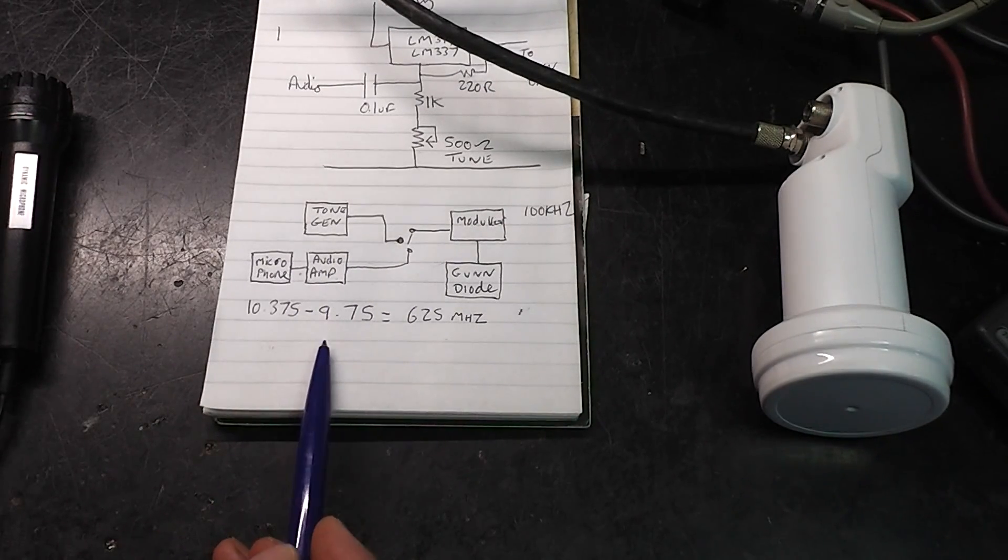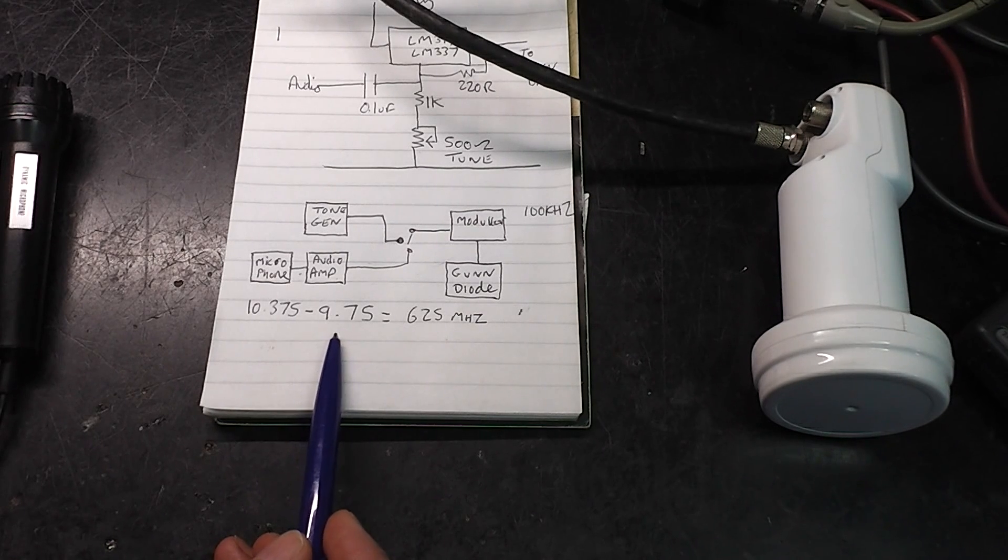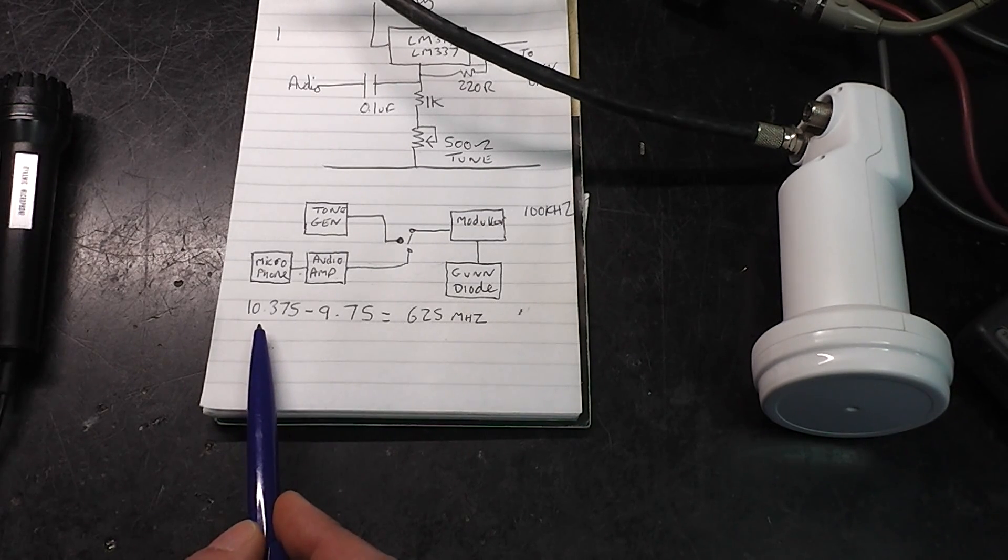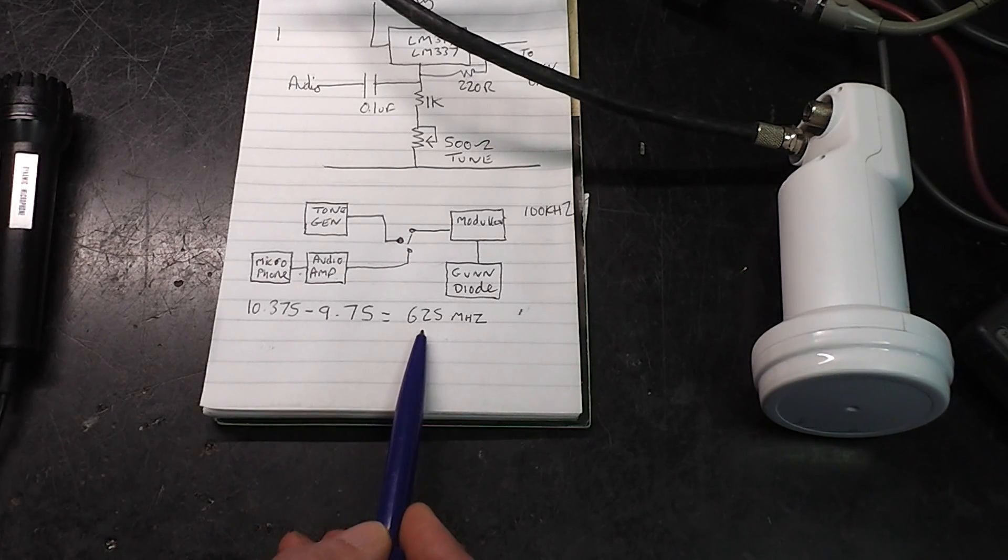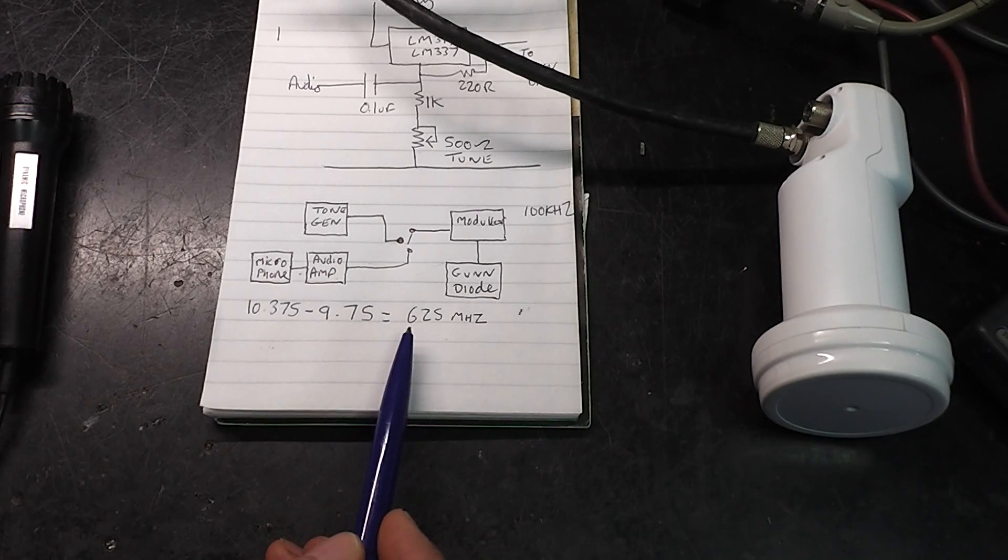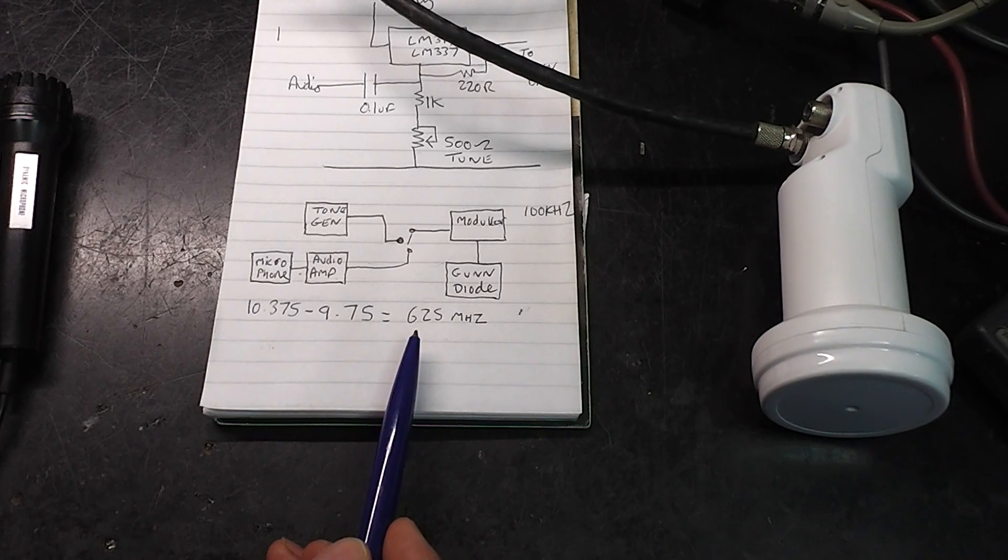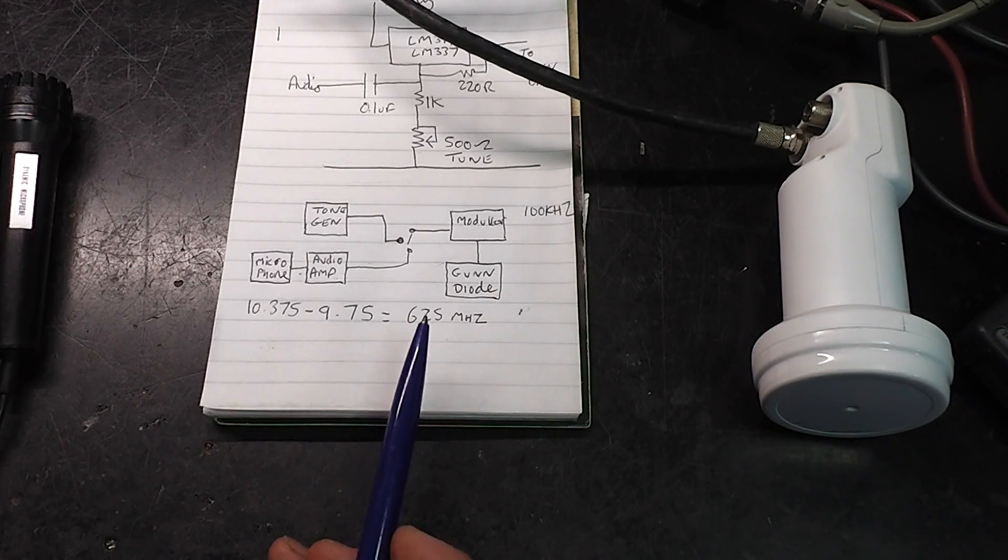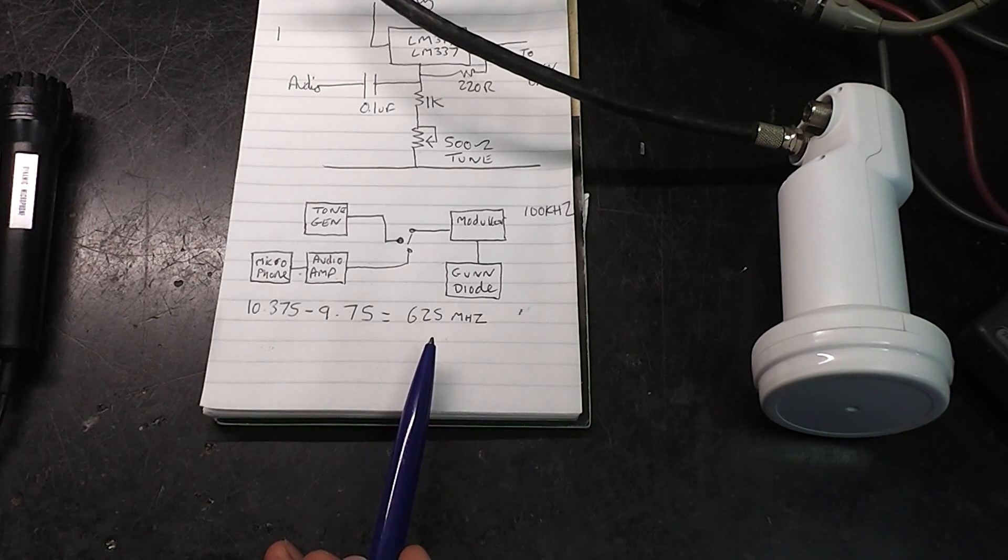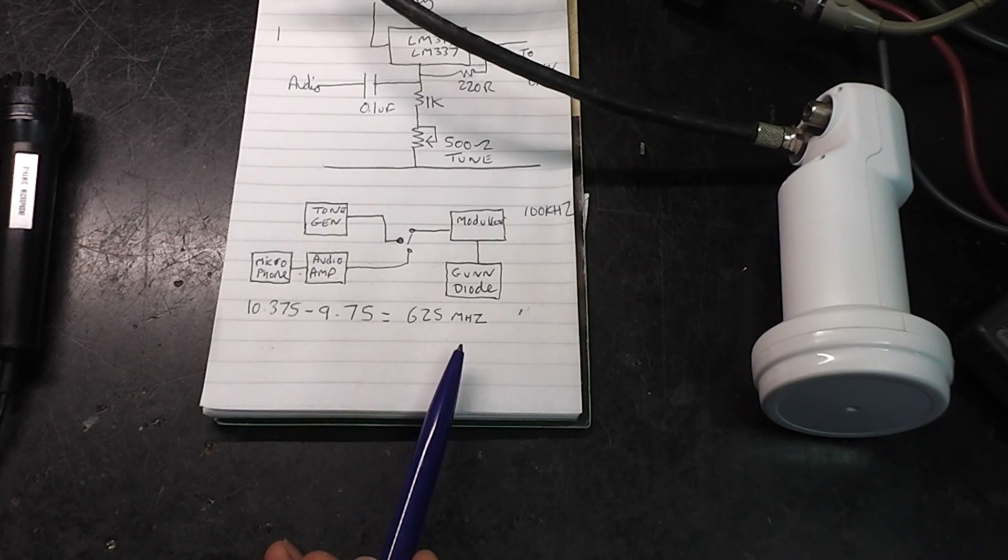The LNB has a local oscillator frequency of 9.75 GHz. So to work out how to receive my transmit frequency, which I've put in the middle of the Y-band section of the 10 GHz band, it ends up being 625 MHz. Although the LNB is only designed to output down to 950 MHz, the filters in these LNBs are not particularly sharp. So we're able to still receive this frequency even though it's outside the normal pass band of the output filter.